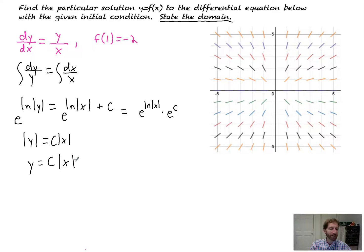Now what I'm going to do is plug in my initial condition, (1, -2), to solve for c. So negative 2 is y, and that's equal to c times 1. So c has to be equal to negative 2. We plug that back in, and we get y equals negative 2 times the absolute value of x.